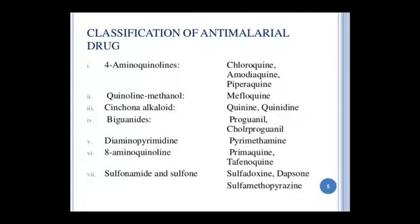Now the classification of anti-malarial drugs: 1. 4-Aminoquinolines — Chloroquine, Amodiaquine, Piperaquine. 2. Quinoline methanol — Mefloquine. 3. Cinchona alkaloids — Quinine and Quinidine. 4. Biguanides — Proguanil and Chlorproguanil. 5. Diaminopyrimidine — Pyrimethamine. 6. 8-Aminoquinolines — Primaquine and Tafenoquine. 7. Sulfonamides and sulfones — Dapsone, Sulfamethoxypyrazine.